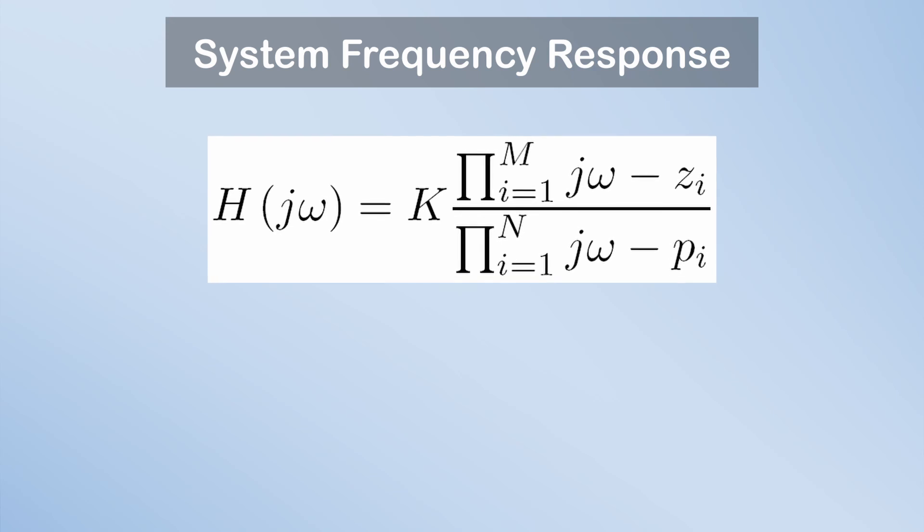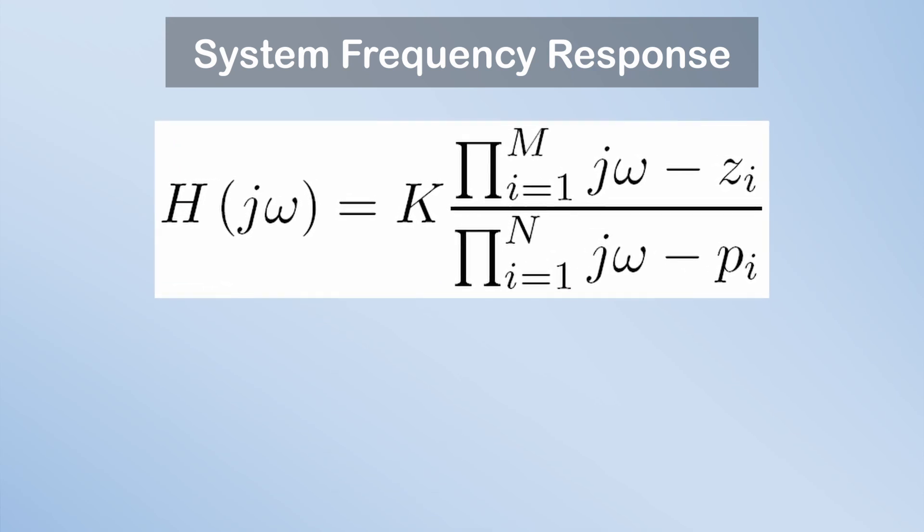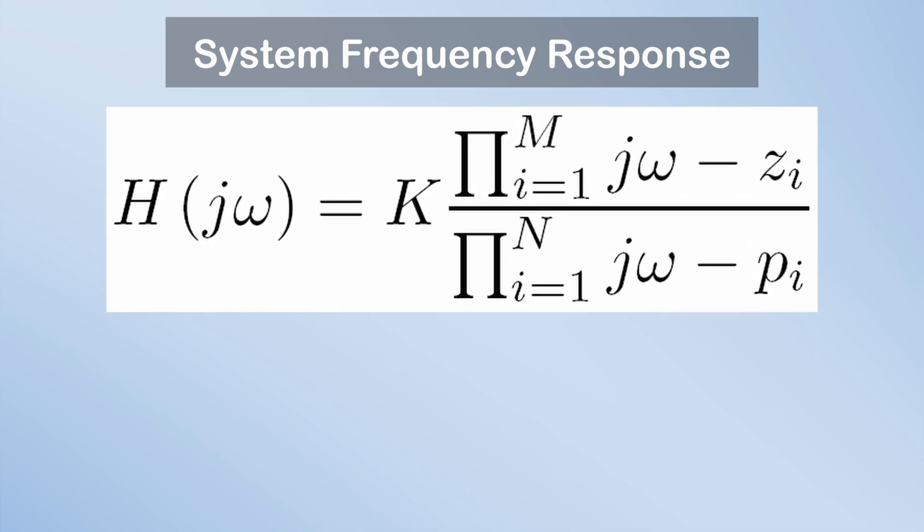You can see H of omega as the transfer function gain K times a product of zero vectors, all pointing to the imaginary S axis at frequency omega, divided by a product of pole vectors, again all pointing to the imaginary S axis at frequency omega.